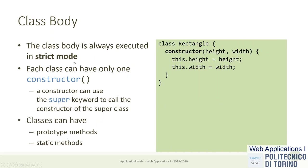The body of the class contains all the properties and methods of the class itself. In particular there's a method called constructor — the syntax is simplified, it's just the name of the function and braces; you don't have to write let constructor equal function, just the name of the function and parameters. Every class should have one constructor method only. If needed, the constructor may contain a call to the super keyword to call the constructor of the upper class — we'll see that with the inheritance syntax. This constructor is the one that defines the properties of the object being created.